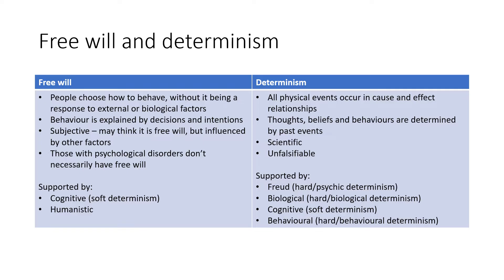Determinism holds that all physical events occur in cause-and-effect relationships and our thoughts, beliefs, and behaviors are determined by past events. It is considered scientific but is unfalsifiable. The approaches supporting determinism are: Freud via hard or psychic determinism; biological, which is hard or biological determinism; cognitive again as soft determinism; and behavioral, which is hard or environmental determinism. For exam questions asking you to name types of determinism, you could use hard or soft determinism, or psychic, biological, or behavioral determinism.